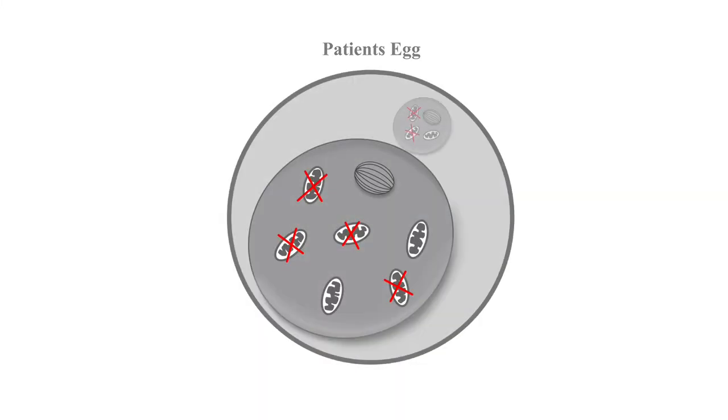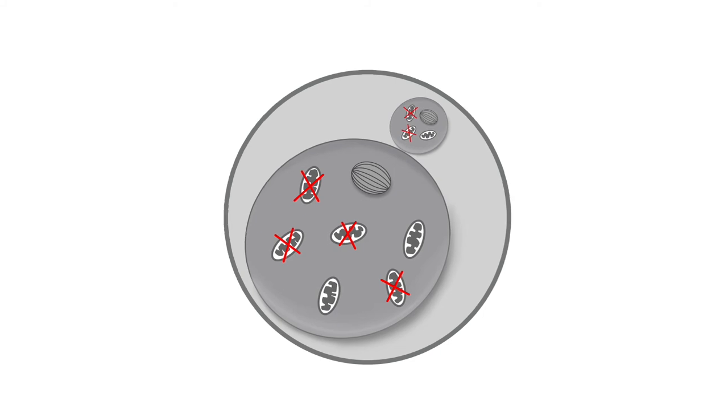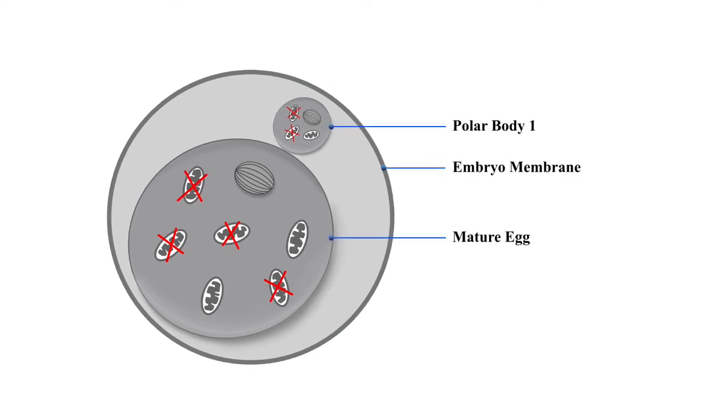Lastly, we will look at the polar body transfer technique or PBT. During meiosis, the oocyte or egg undergoes a series of reductive cell divisions that result in the production of two small bodies with a full and half set of chromosomes respectively. In PBT, the haploid polar body of the patient is transferred into an enucleated donor egg called PB1 or to a fertilized zygote with one pronuclei removed called PB2. This technique aims to complete the chromosome set required to produce a viable zygote. For the purposes of this technique, we will look at PB1 transfers only.